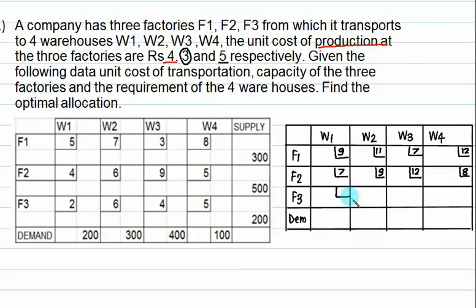For factory 3 with production cost 5, the combined costs are: first cell is 7, then 6+5=11, 4+5=9, and 5+5=10.